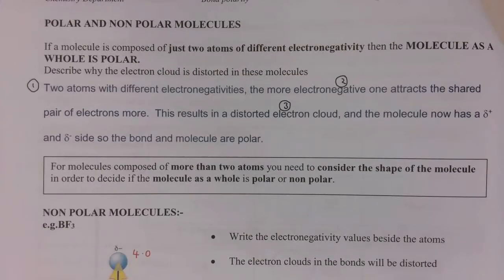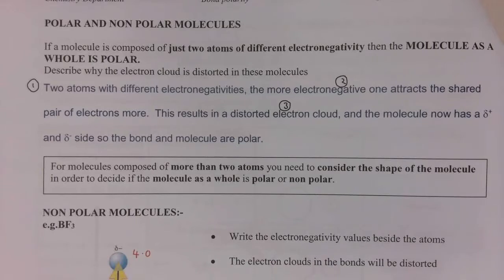It's important when you're answering these types of questions that you get all the marks for it. You get one mark for stating that you've got different electronegativities, one mark for saying that the more electronegative one will attract the shared pair of electrons more, and the last mark for the fact that therefore you end up with a distorted electron cloud.